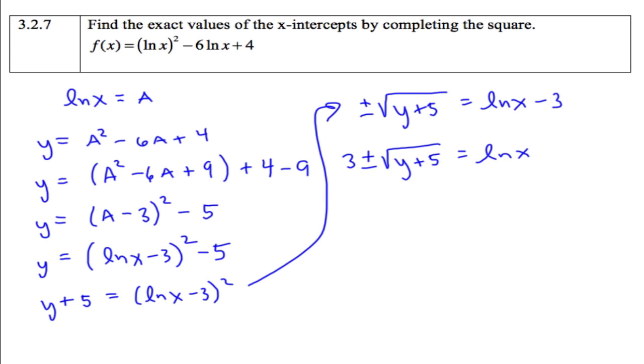And to get rid of that ln, I'm going to take e to the both sides. And we will be left with e to the 3 plus and minus square root of y plus 5 is equal to x. And the x-intercepts happen when y is 0. So I'm going to substitute y is 0. So we have e to the 3 plus or minus root 5 equals x. Those are your two x-intercepts.